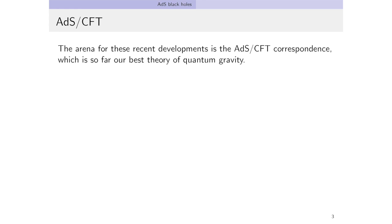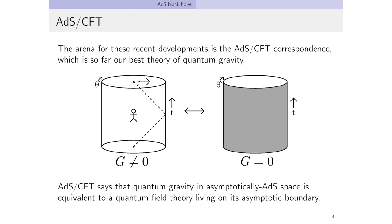The arena for these new developments is the ADS-CFT correspondence, which you've been hearing about for the last two days. It's our best theory of quantum gravity so far. The basic idea is that you have quantum gravity in asymptotically ADS space, and it's supposed to be equivalent to some quantum field theory living on the boundary. We like that because the quantum field theory doesn't have gravity, which makes it easier to understand.